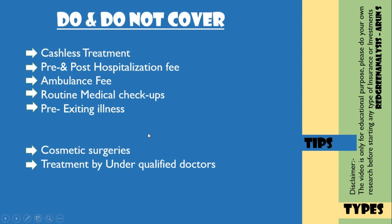Now let's look at what health insurance covers. You can see the type of coverage — cashless treatment and reimbursement are available. During hospitalization, you can use a card with the insurance provider. Pre and post hospitalization fees, medical expenses, and ambulance fees can also be claimed.